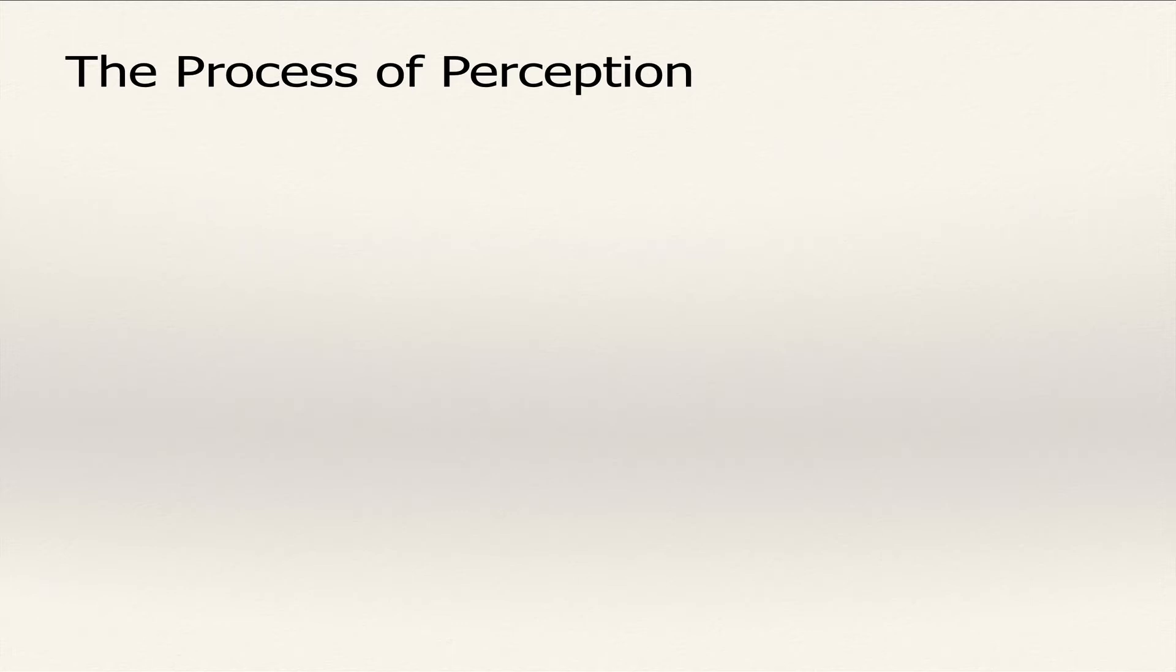So let's take a look at the process of perception right now and try to get a better understanding of how this happens, how we can go from the environment to a reality. The process of perception has three stages. The first stage, select. The second stage, sort. And the third stage, interpret.